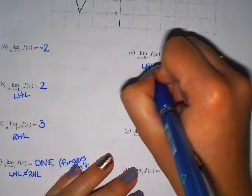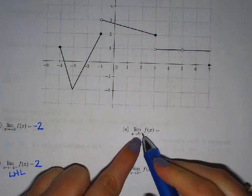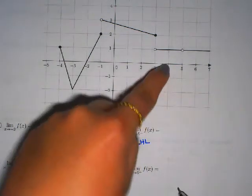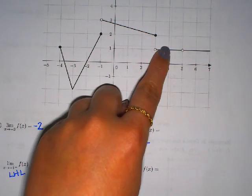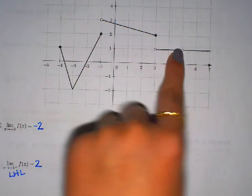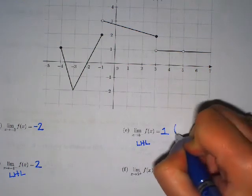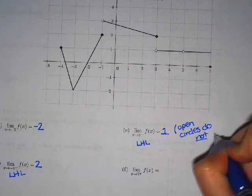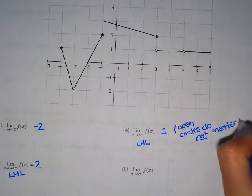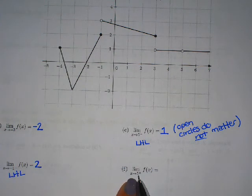Now we're approaching 5 from the negative side — a left-hand limit at positive 5, just from the left. Here's 5 on the graph; I come in from the left. There's no graph down here, so I hop up. There's only one place to hop on since these are functions with one y value. Coming in from the left of 5, my y value is 1. It's an open circle, but open circles do not matter to a limit — it's just what y value you're near. That open circle is called a hole, and it doesn't affect the limit.